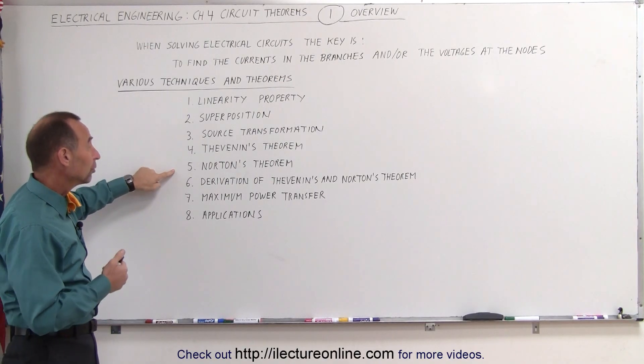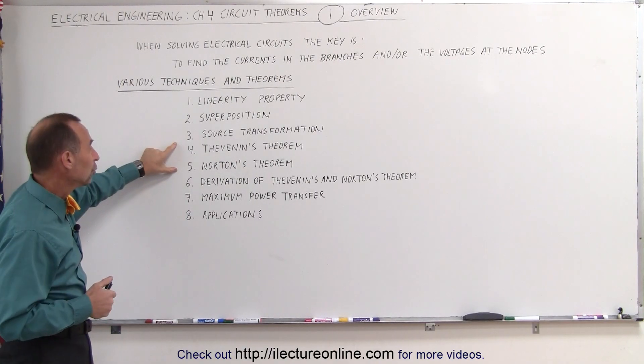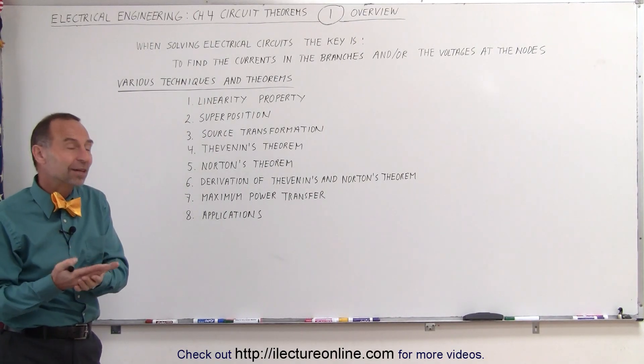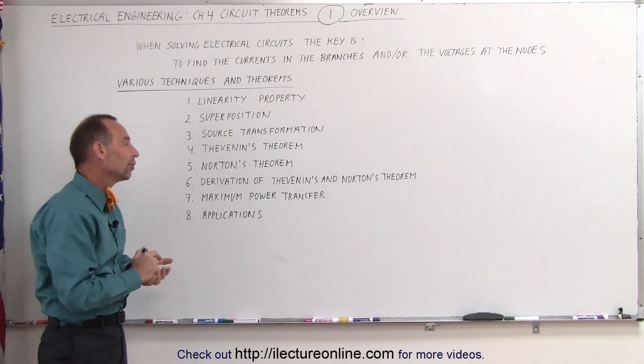Next is Thevenin's theorem and Norton's theorem. These are the two most well-known theorems in circuit analysis. Then we're going to look at how those theorems came about—we're going to look at the derivation of those two theorems.